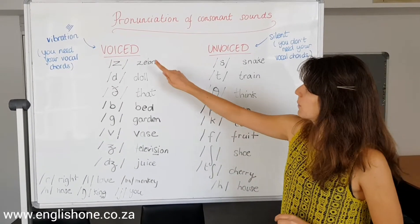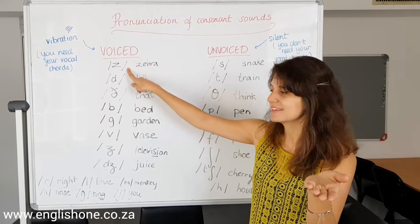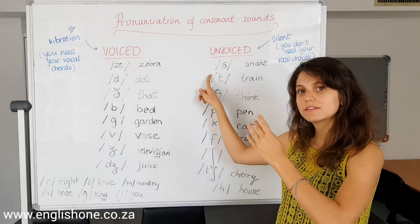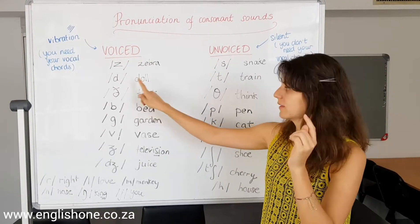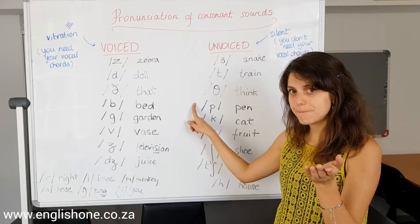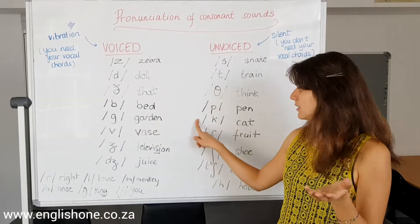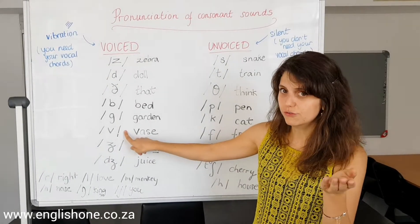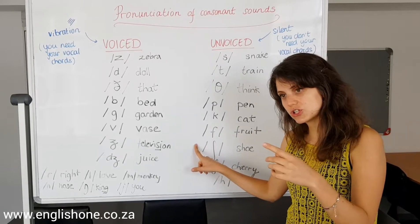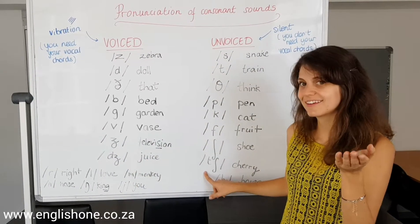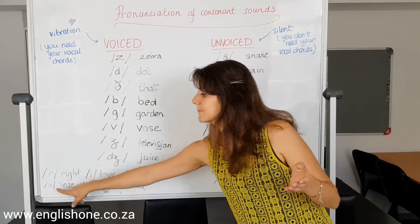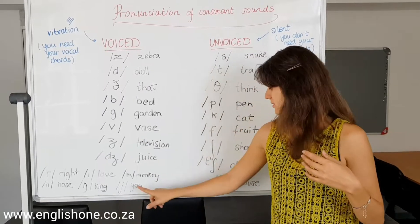Let's review the pairs. Voiced Z — unvoiced S. Voiced D — unvoiced T. Voiced 'th' — unvoiced 'th.' Voiced B — unvoiced P. Voiced G — unvoiced K. Voiced M and L — unvoiced F. Voiced J — unvoiced SH. Voiced J and CH. And then R, L, M, N, NG, Y, N, H.